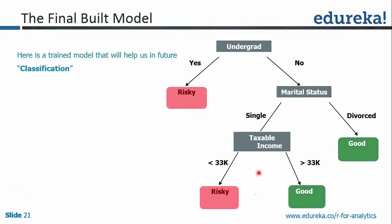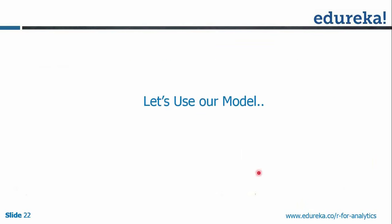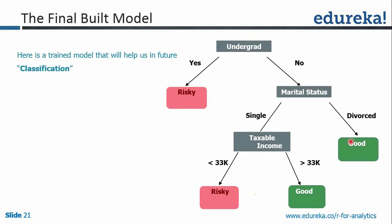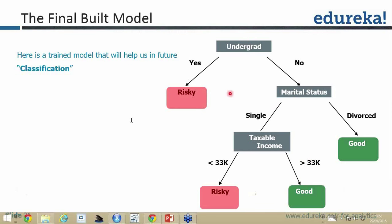These are your classification rules. Now let's use the model. Here is a new data point — a new person came in and filled in the application. You're faced with whether to give them the loan. First, is he an undergraduate? No — take that route. Marital status: divorced. Based on the rule established — undergraduate no + divorced = good — you classify this customer as good, and probably approve the loan.